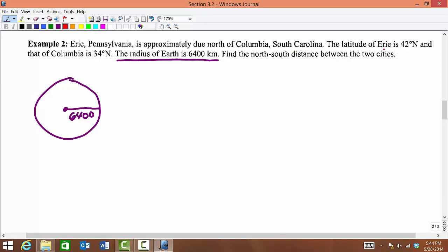The latitude of Erie is 42 degrees north. So using our equator here as our initial side, if I go up about 42 degrees, let's say that puts us right here. So here would be Erie, 42 degrees north.